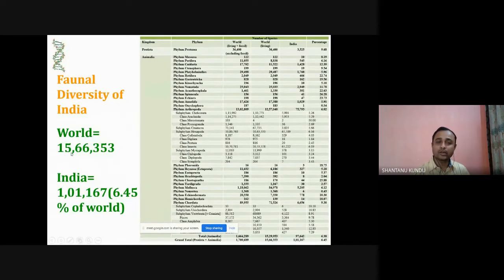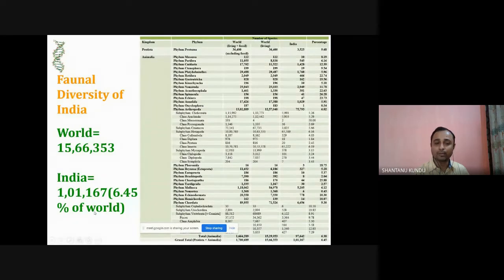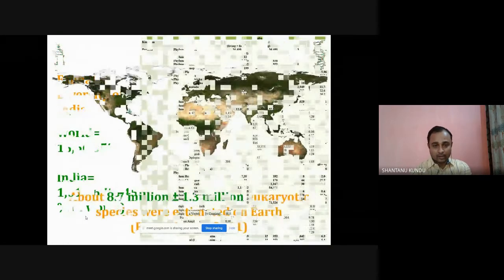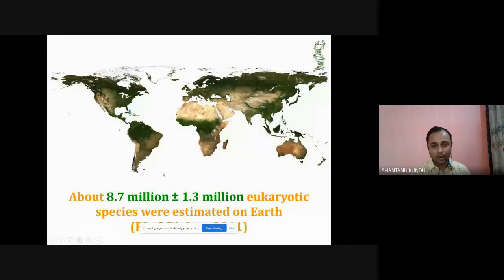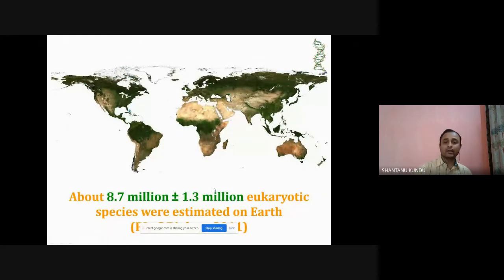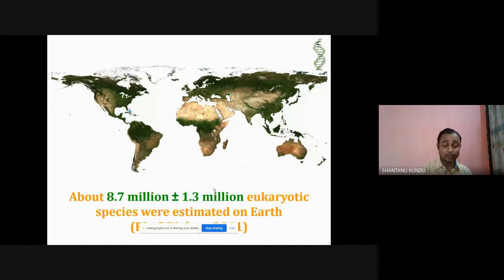As of now, the world consists of about 1,566,353 species, and India accounts for 6.45 percent of the world's biodiversity — more than one lakh species. A key paper in PLOS Biology estimated that around 8.7 million eukaryotic species exist on Earth, but very few of them are really known to scientists and researchers.